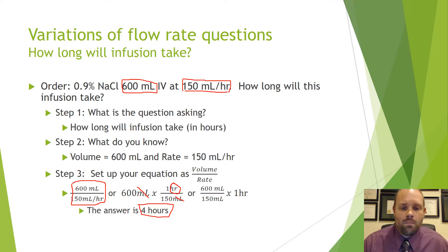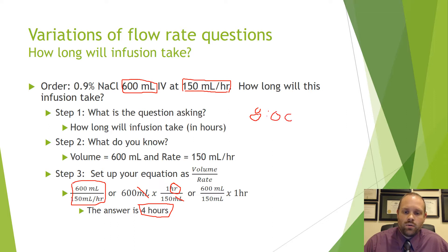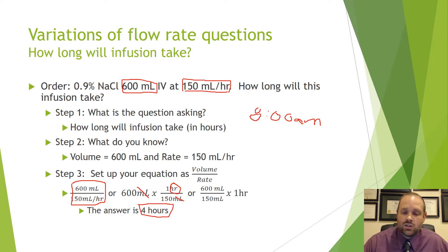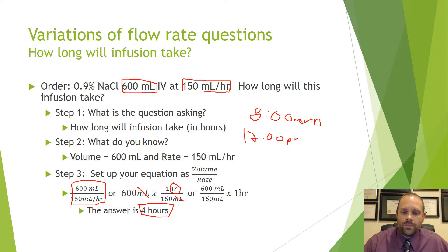A variation of this might be: let's say the infusion pump starts at 8 a.m. and they ask what time the infusion pump will run out or need to be changed. If it starts at 8 a.m. and runs for four hours, we know we would need to change it at 12 p.m., or noon.